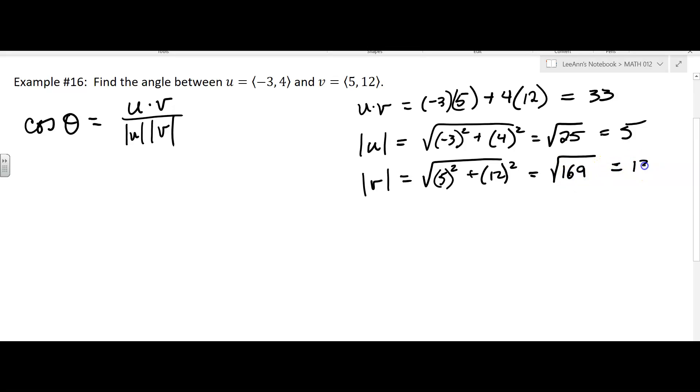Okay, so what does all that mean when we go to put it into our formula here? Cosine theta is going to be the dot product 33 divided by, and then it's going to be 5 times 13. And so that's going to be, well, cosine theta 33 over 65.